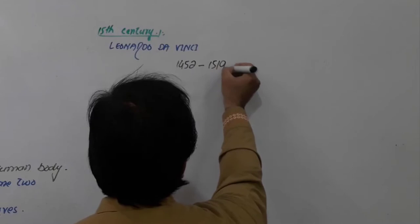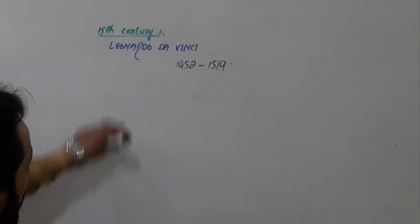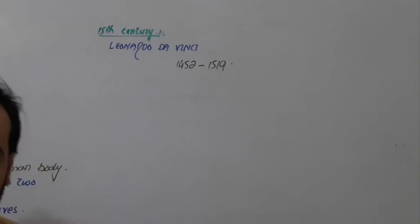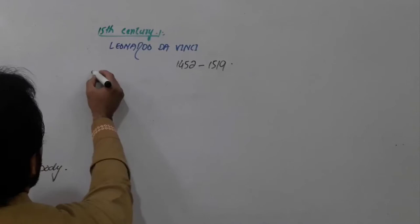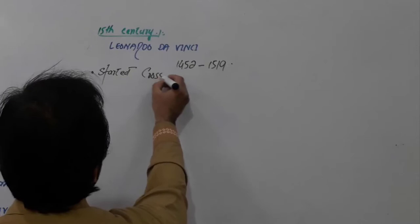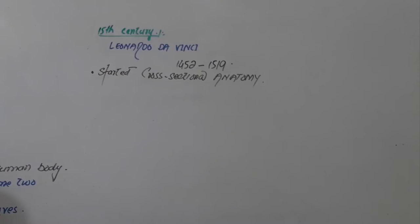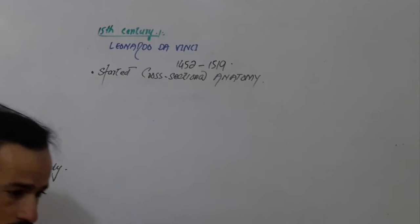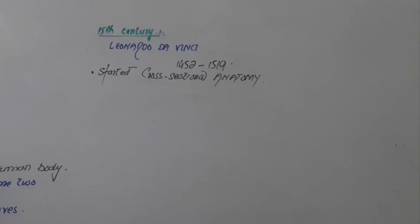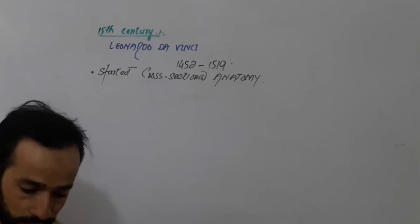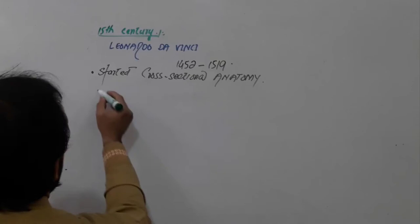Leonardo da Vinci worked from 1452 to 1519. He did many important discoveries, and for the first time he introduced cross-sectional anatomy. So cross-sectional anatomy was introduced by Leonardo da Vinci. We are discussing history, not the details of cross-sectional anatomy itself, so just remember this key point.